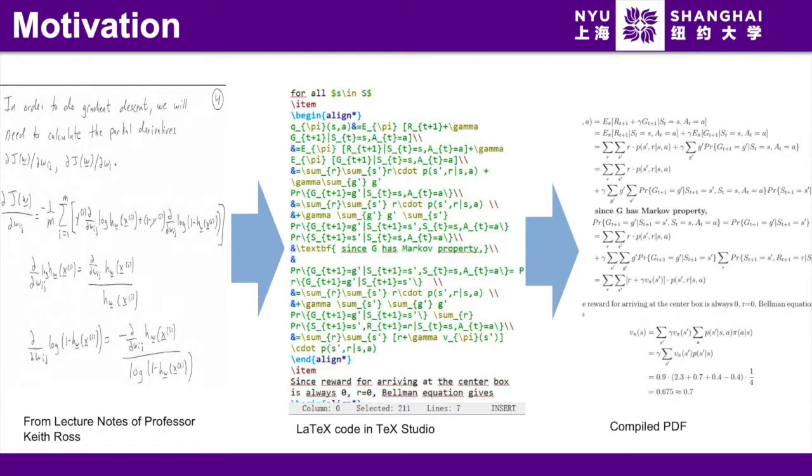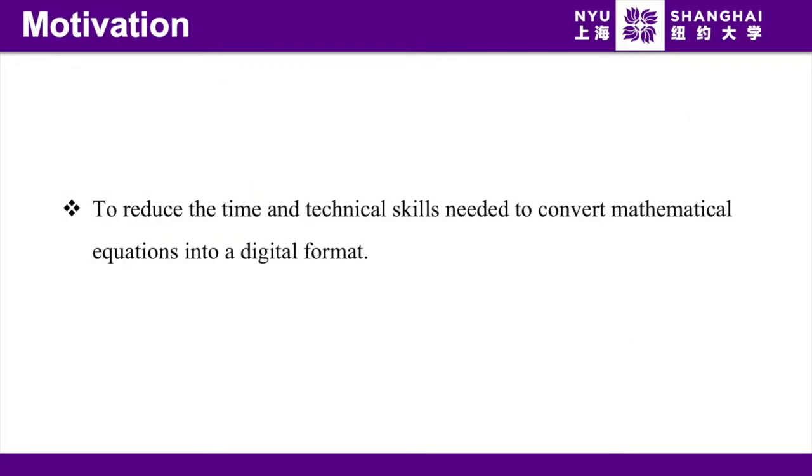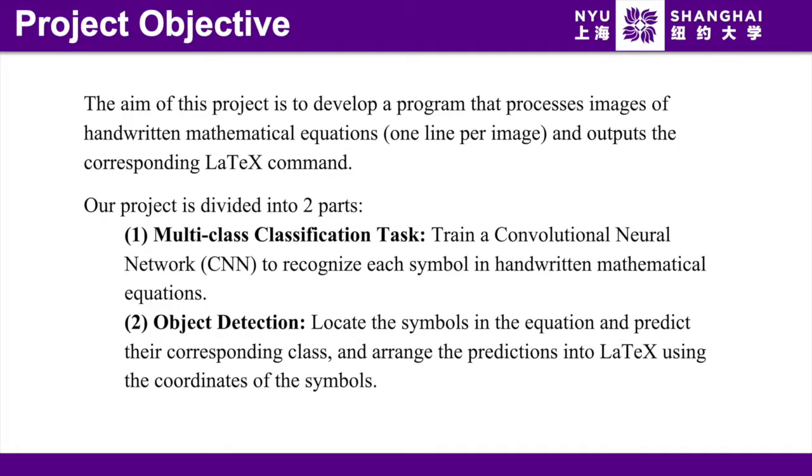So if we want to convert Professor Keith Ross's lecture notes into digital format, we first have to type it all in LaTeX code, then compile it into PDF. However, coding LaTeX is tedious. So can we just omit this part and use machine learning to directly convert handwritten expression into digital format? Our motivation is to reduce the time and technical skills needed to convert mathematical equations into a digital format. Our goal is to develop a program that processes images of handwritten mathematical equations and outputs the corresponding LaTeX command.